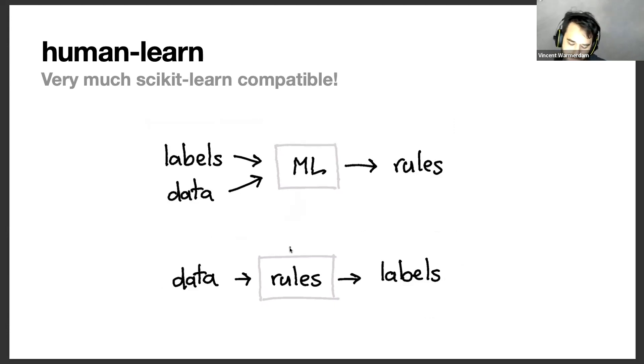And then I started wondering, maybe there are components that I can make that also make it easier to sort of exchange ideas between these two systems. And that's what human learn effectively is. It's just a bunch of scikit-learn components that you can just click in your pipeline that try to facilitate these kinds of models a bit more.